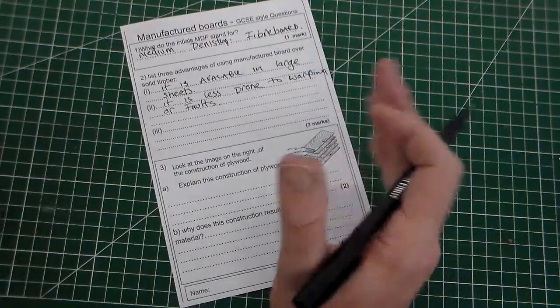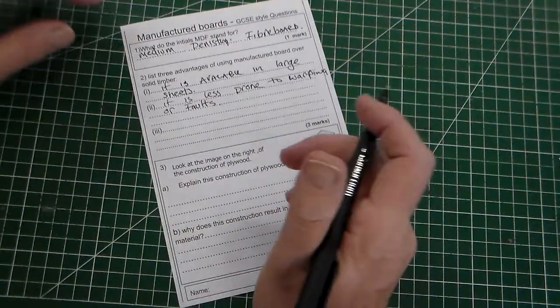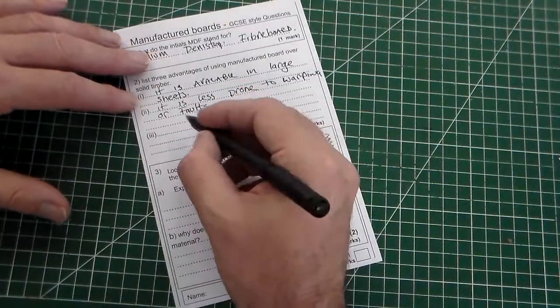Manufactured board has none of those issues. So, manufactured board, generally, piece of MDF, there's no faults. It's just a uniform material because it's manufactured.